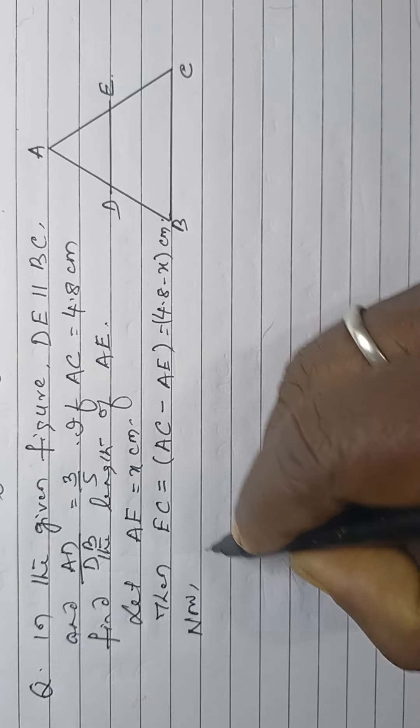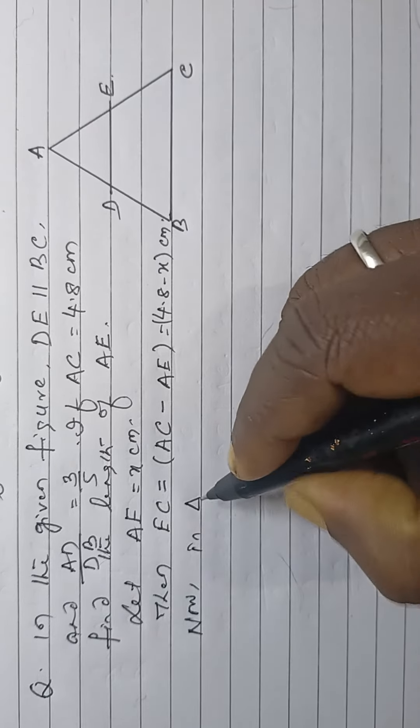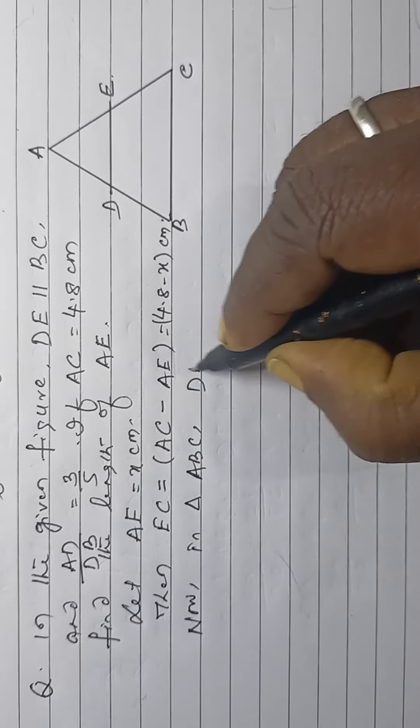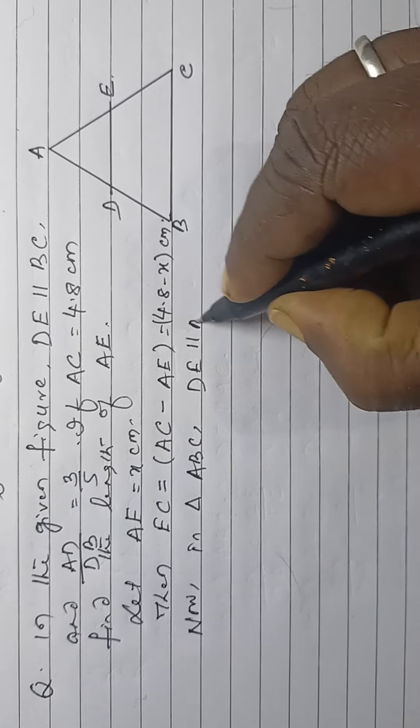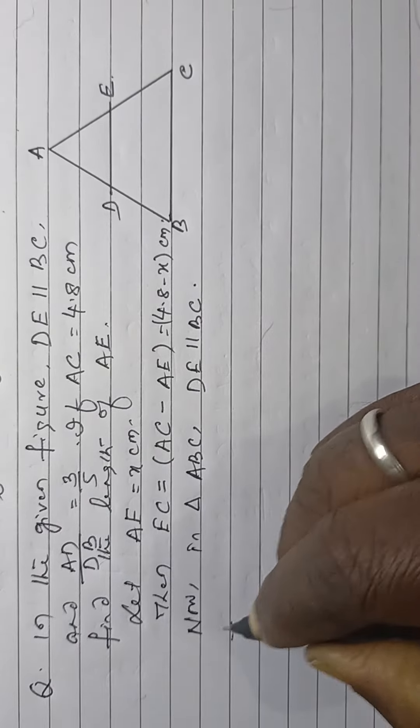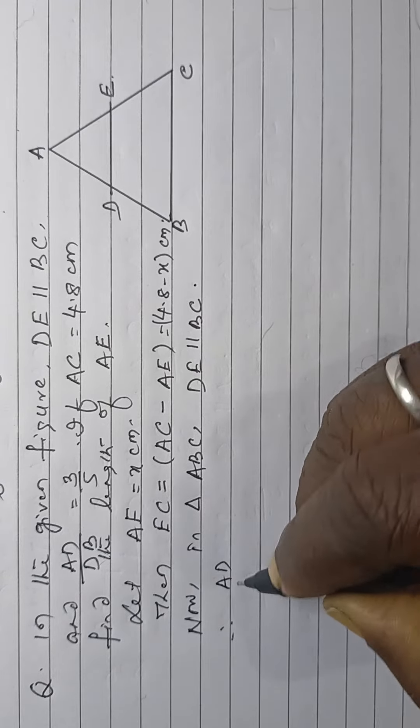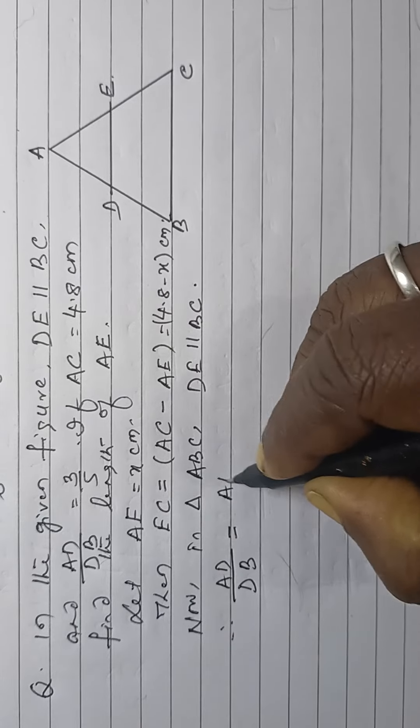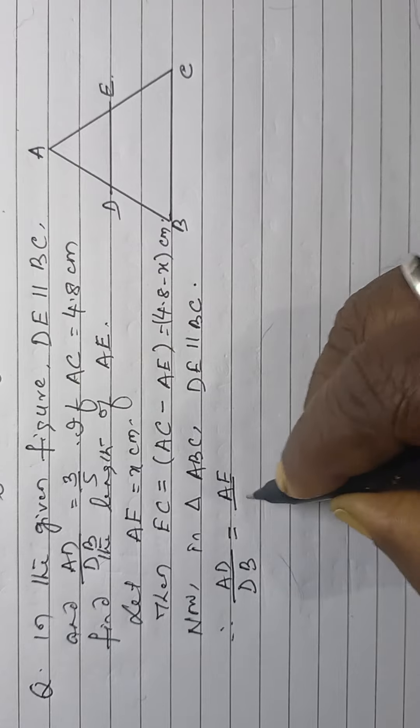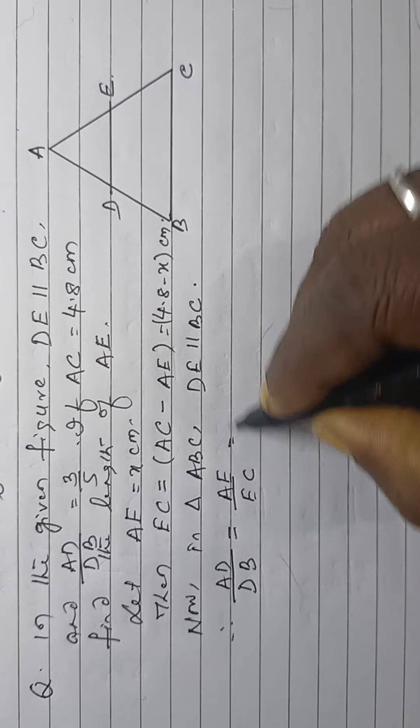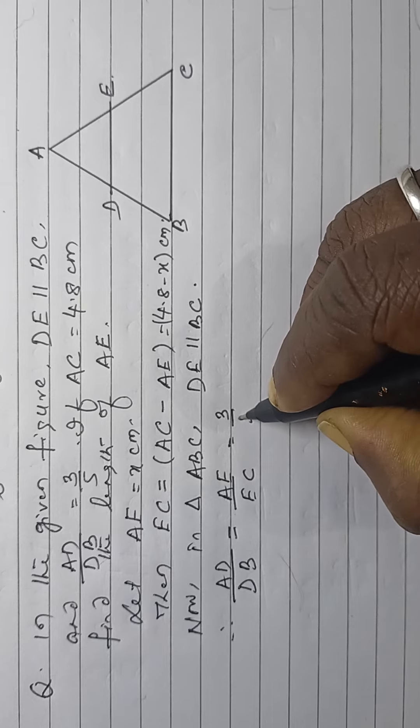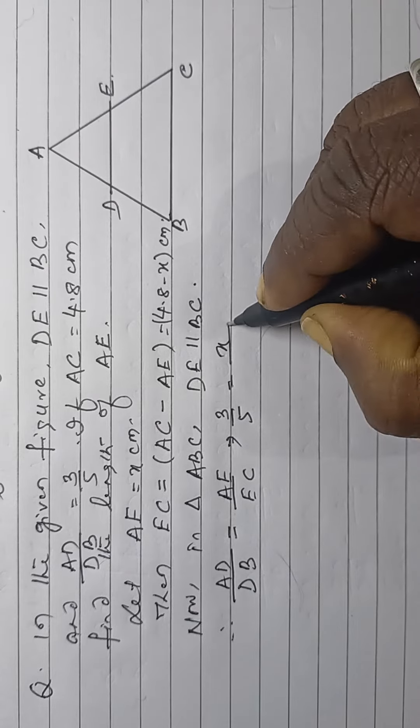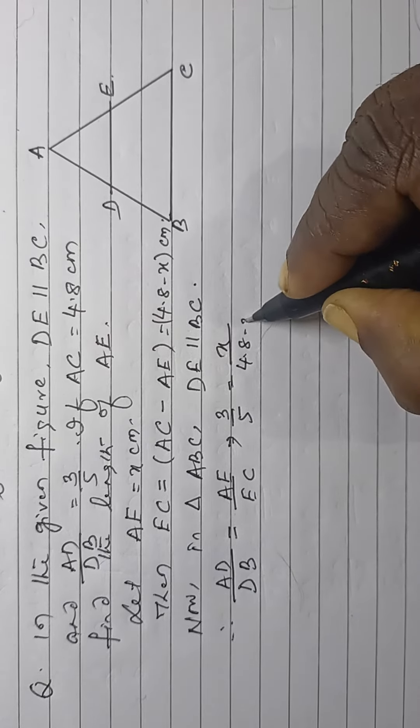Now, in triangle ABC DE parallel to BC. Therefore, AD by DB is equal to AE by EC is equal to 3 by 5 is equal to X by 4.8 minus X.